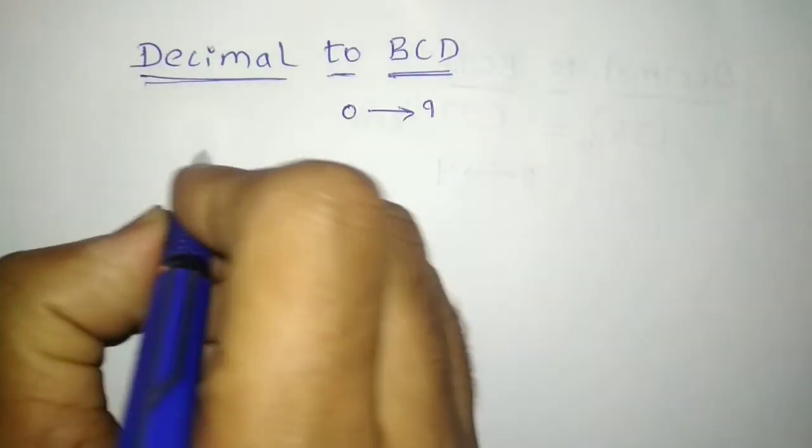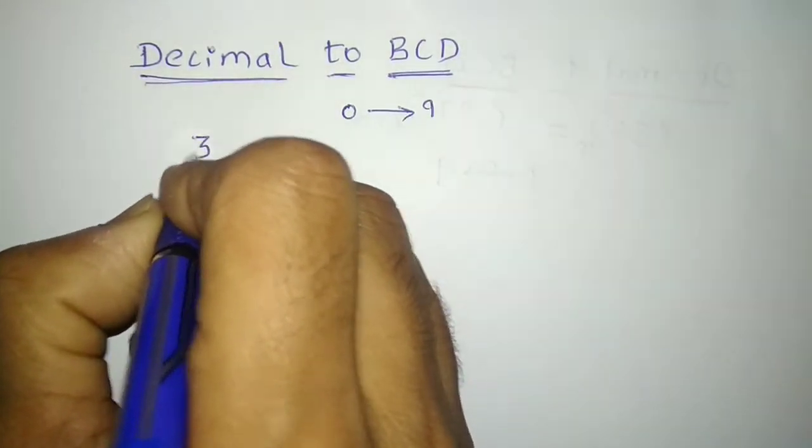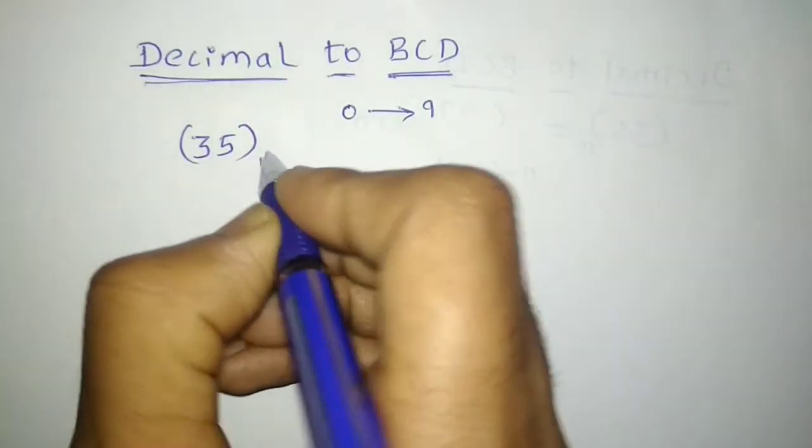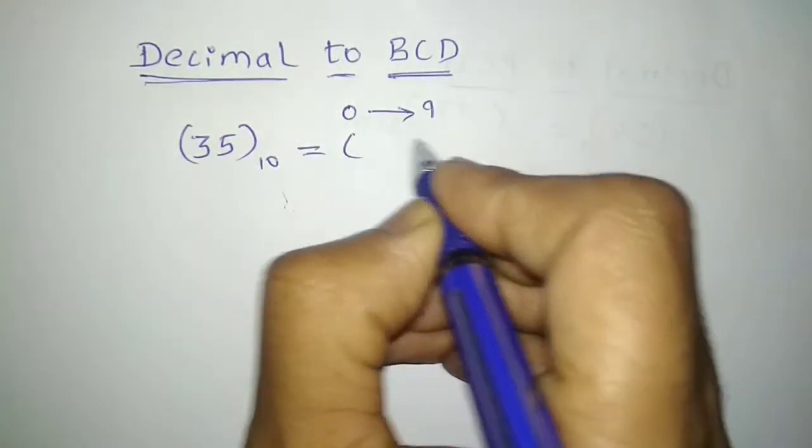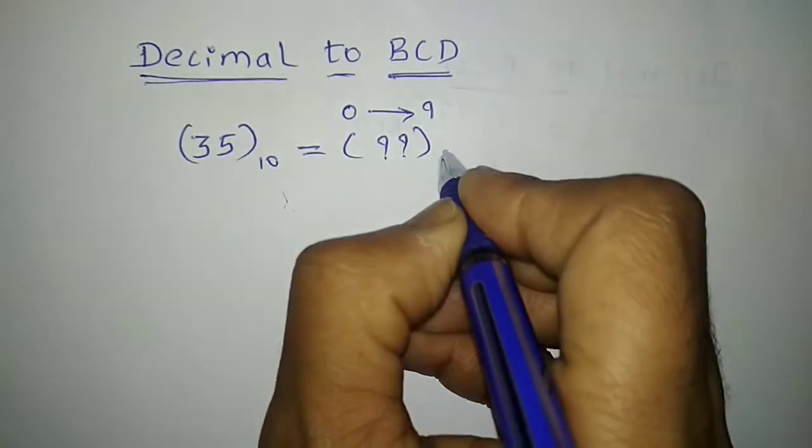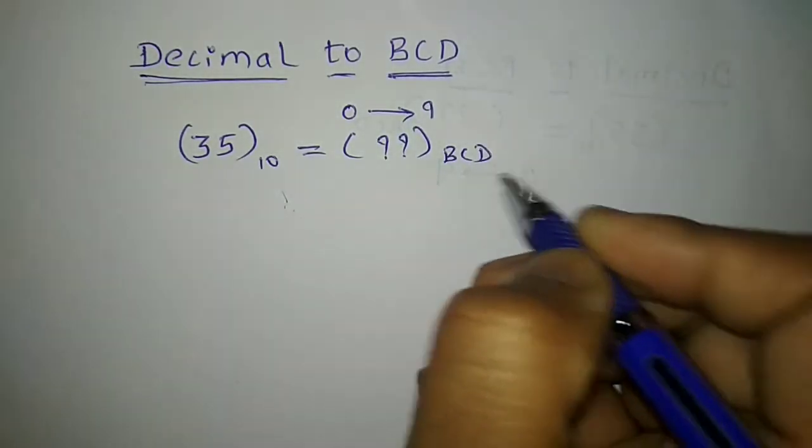So to understand this, let me consider an example, let it be 35 in decimal. I would like to know what is its equivalent number in BCD. So how do I find that?